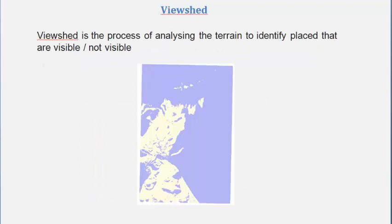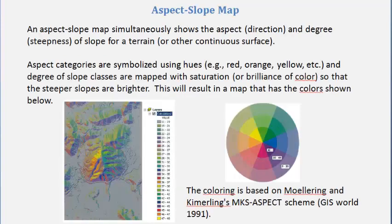Later on we'll also get into producing a viewshed to analyze what's visible or not visible, like a radar prediction. Finally, we will produce an aspect-slope map combining both the aspect and the slope.